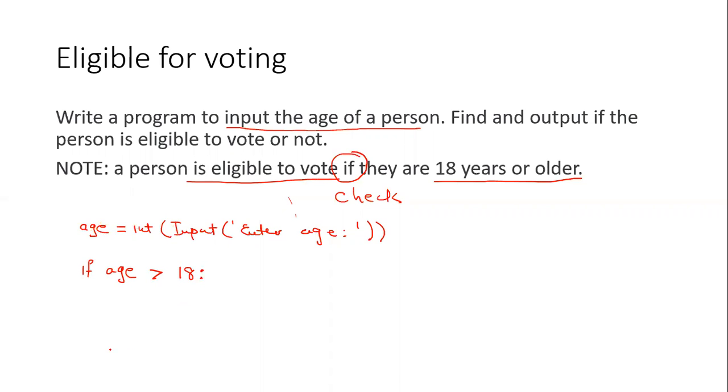That means the person is eligible to vote. So I am going to say print person is eligible to vote. That semicolon should not be there. That's me confusing my languages.